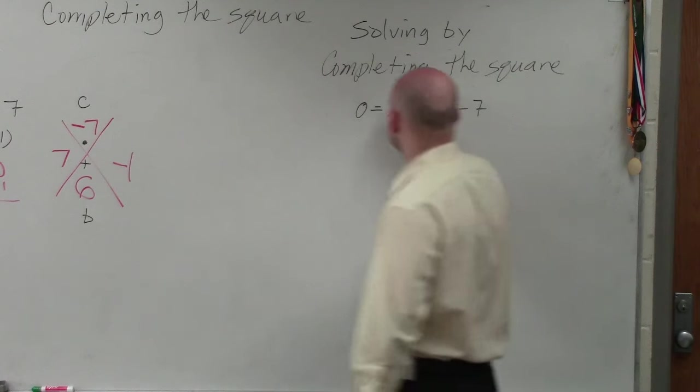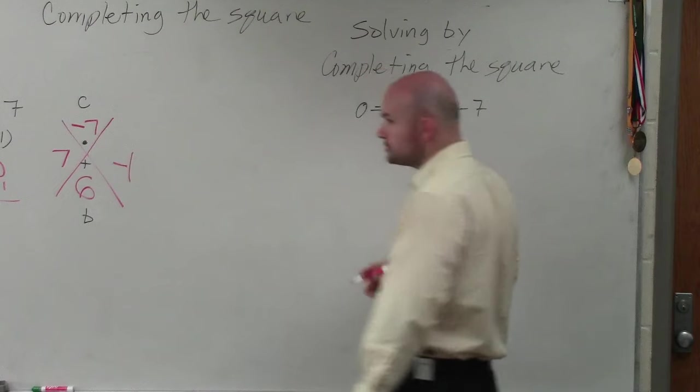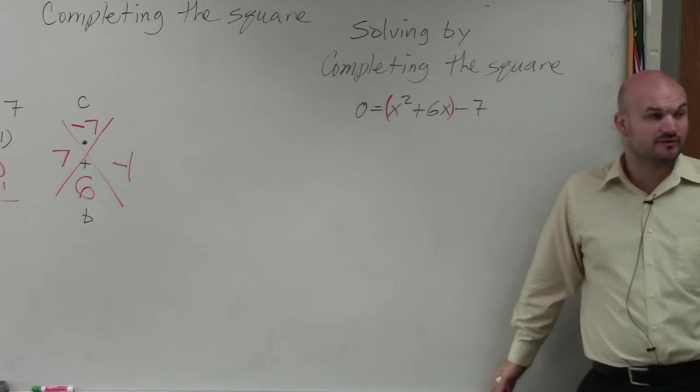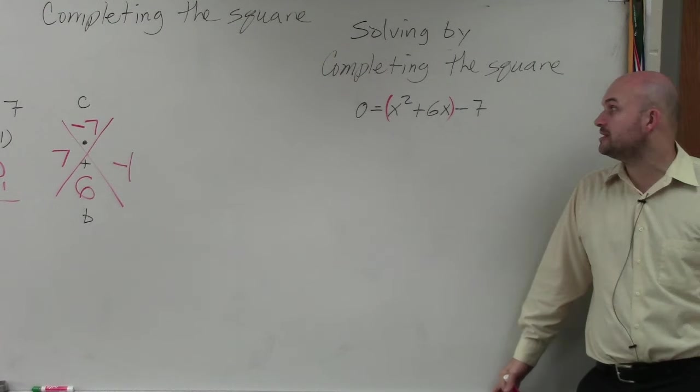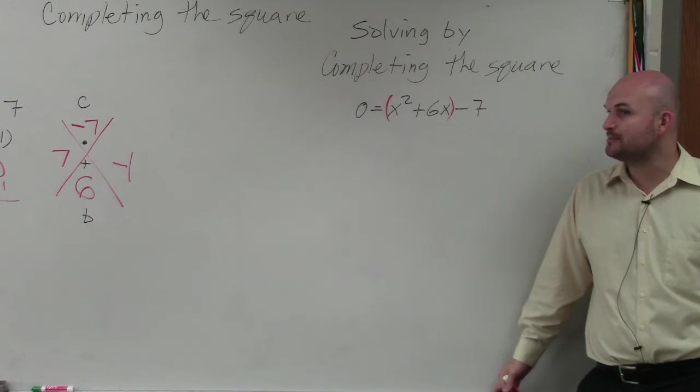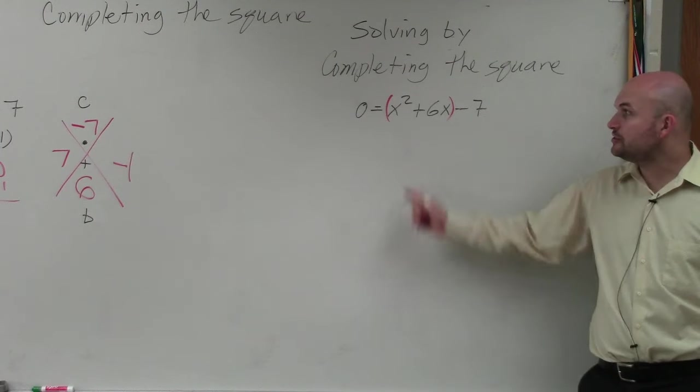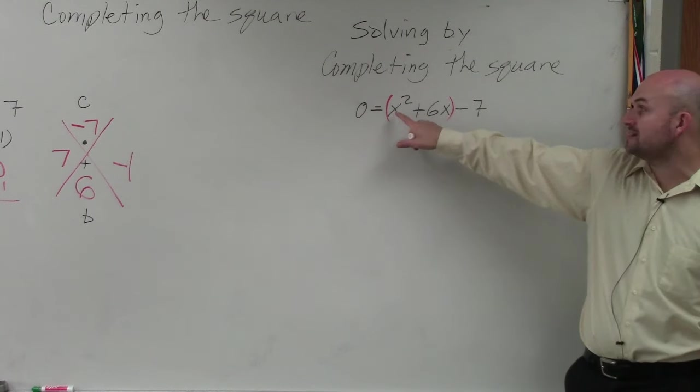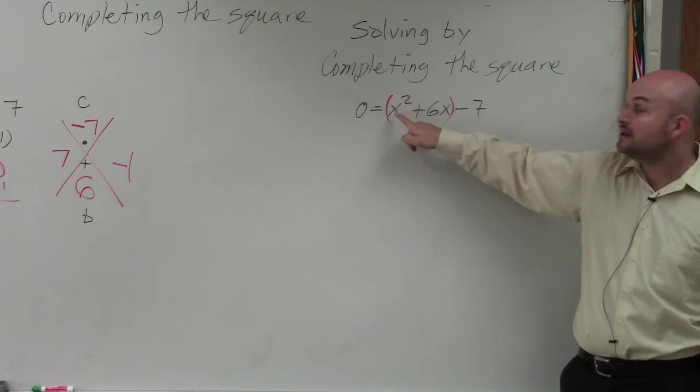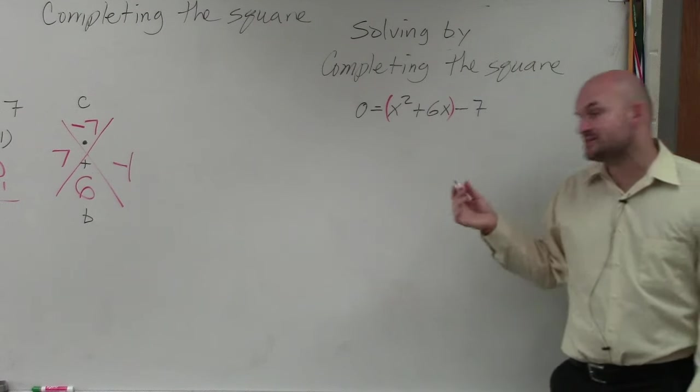So if you guys remember, the basic steps where the first step was to group the first and the last term, or the two middle terms, the x squared and the 6x. That was step number one. Step number two was to factor out anything in front of your a. Make sure a is 1. In this case, my a is 1, so I can move on to step two.